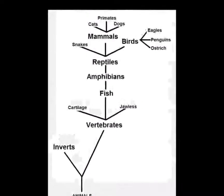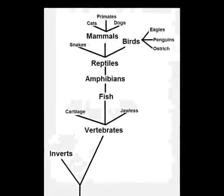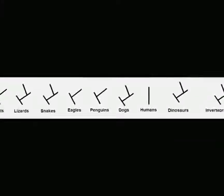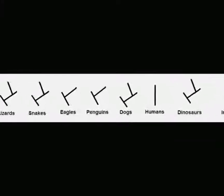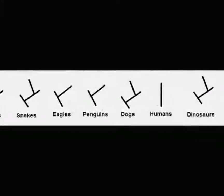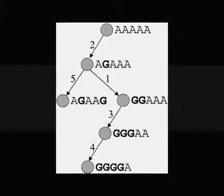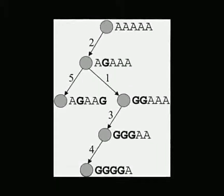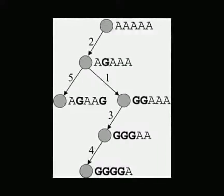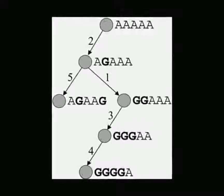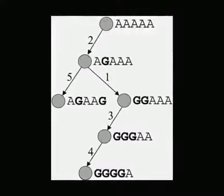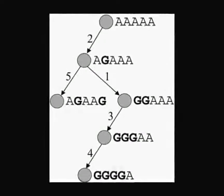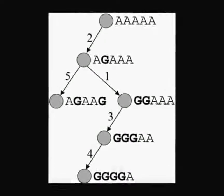I stumbled upon images like these several weeks ago, and they're very useful in this discussion as they will clearly outline exactly what creationism and evolution both say. From these images we can draw and make predictions about what would be true if either theory were correct.